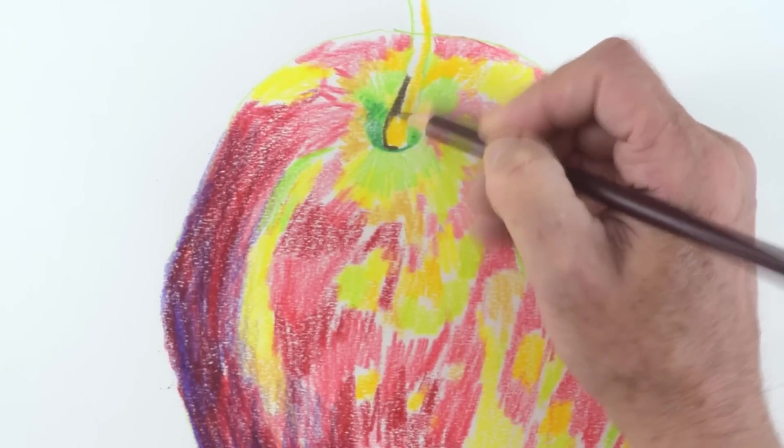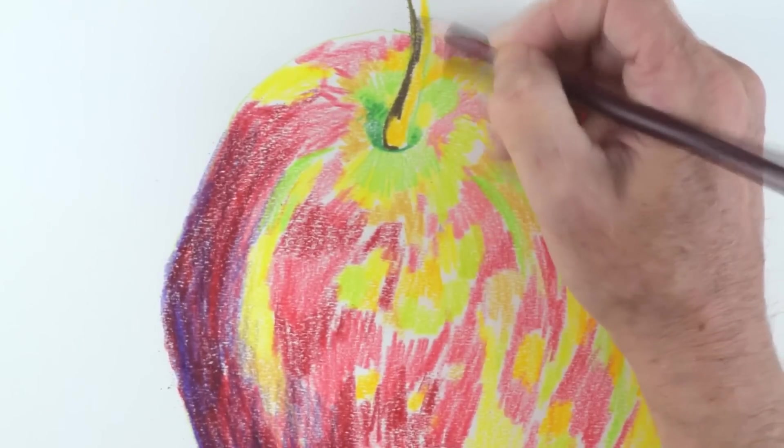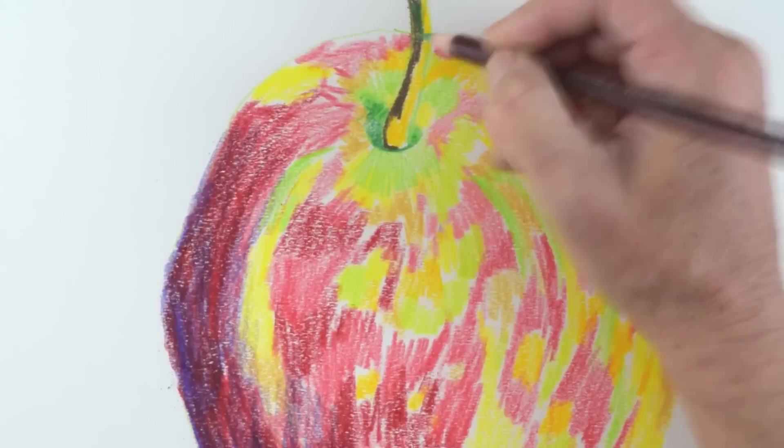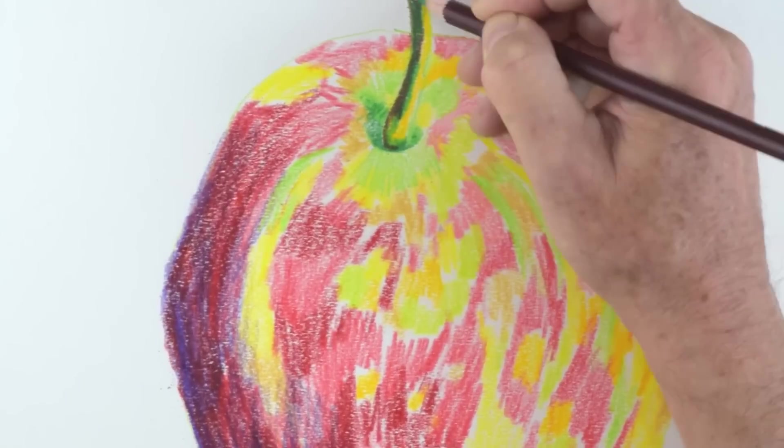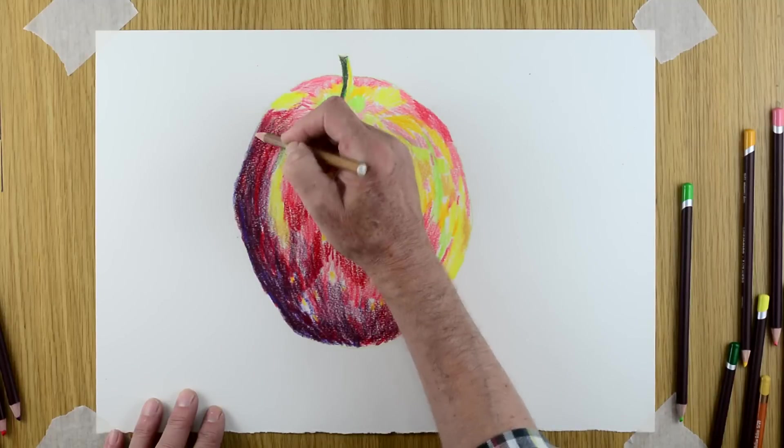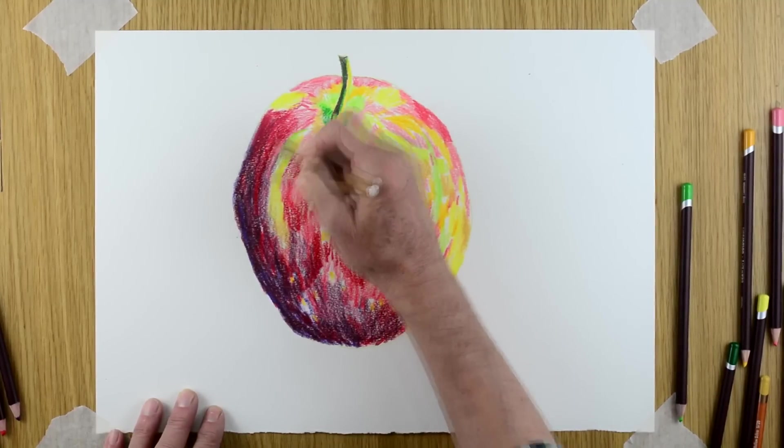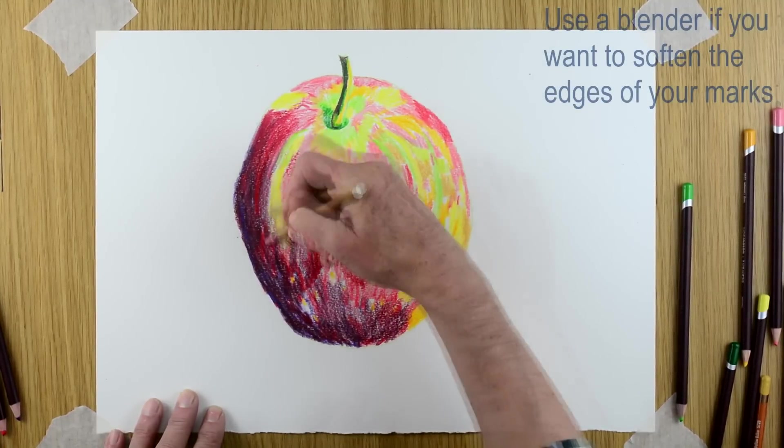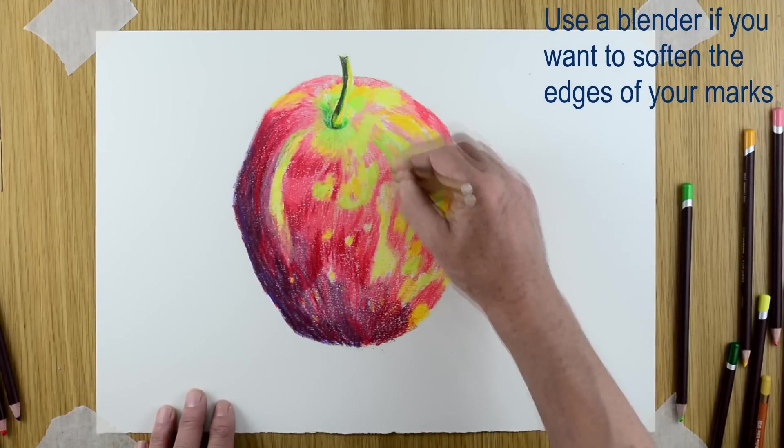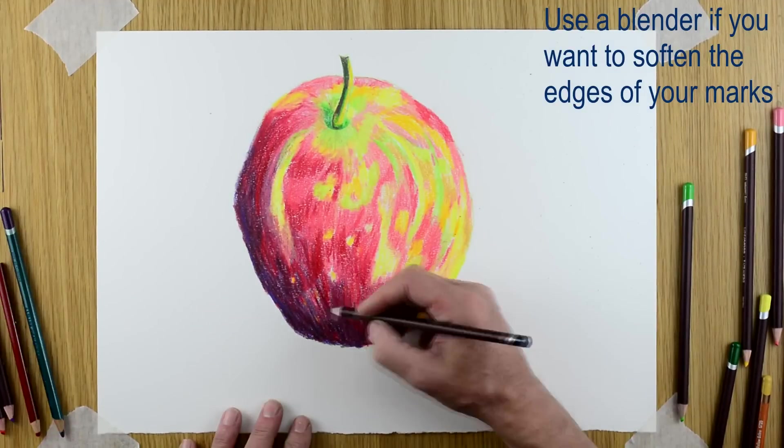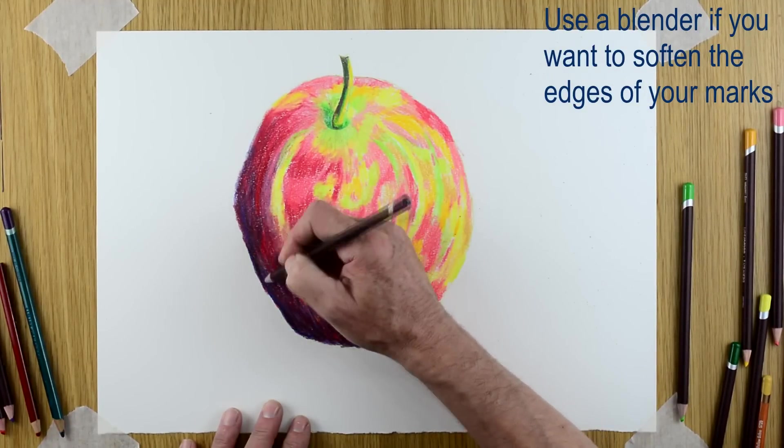You see here now I'm beginning to just suggest a little bit of the detail on the stem, just blocking that in. We're going to be going over this shortly with the blender. Here we go, you see blending this in. Now you'll notice I won't go through the whole thing, I'll chop a bit out here, but you see how we're blending over the top and it's softening the colors.